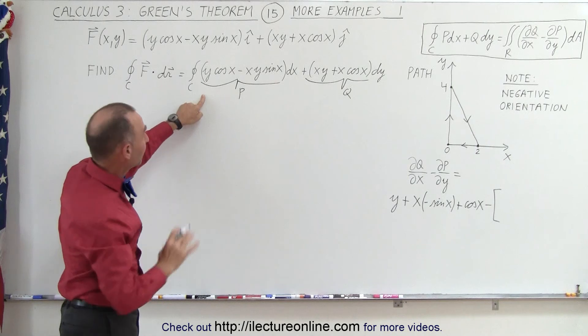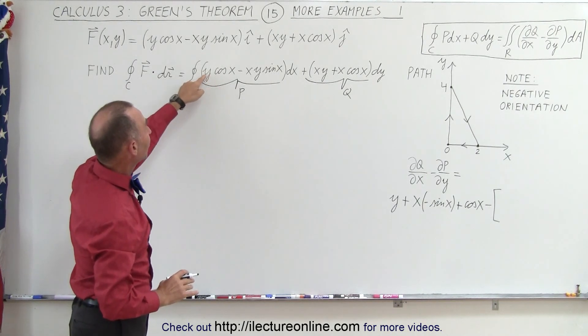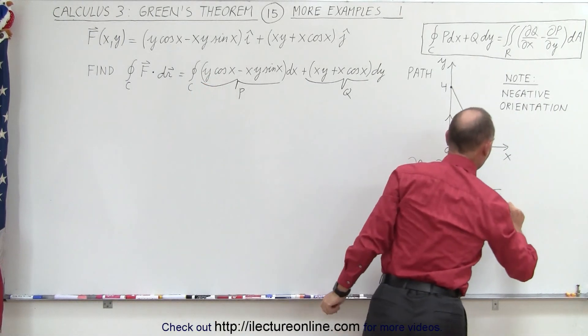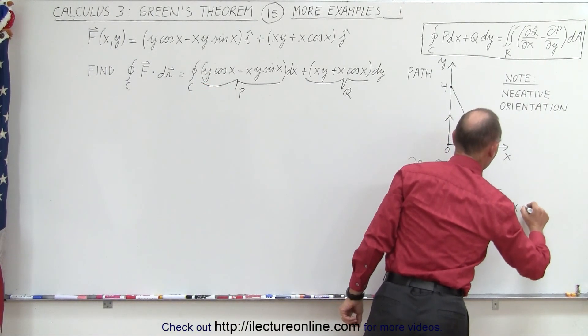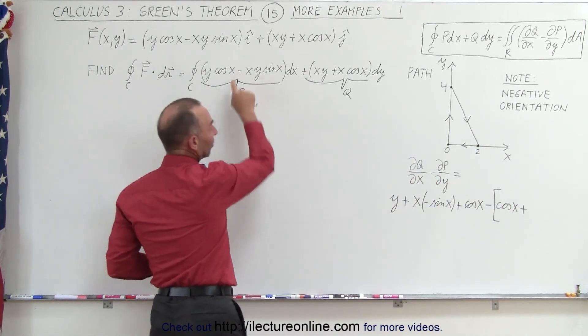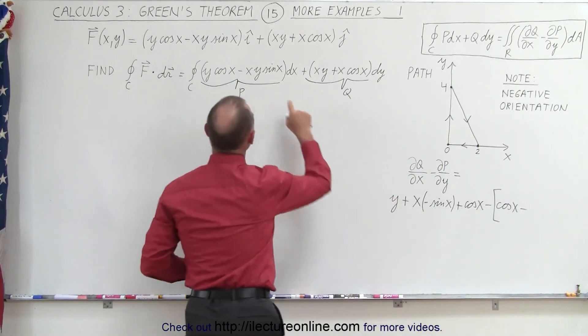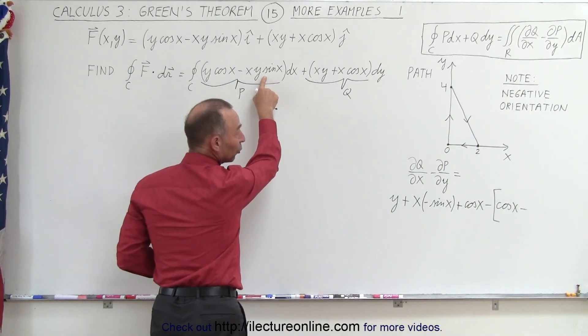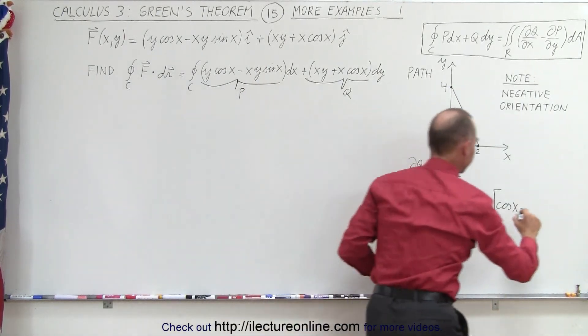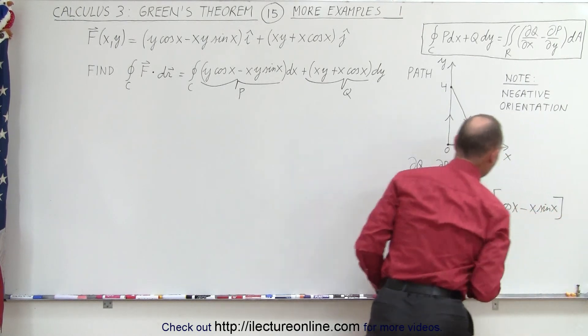Now we subtract from that the partial of P with respect to Y. Okay, so it's a little bit more complicated, but hang in there. So here we take our first term. If Y is the variable, then cosine of X is the coefficient. So that gives us the cosine of X plus, oh, actually because we have a minus here, we're going to take that and put that into a minus. And the derivative of this with respect to Y, and so that would be X times the sine of X.